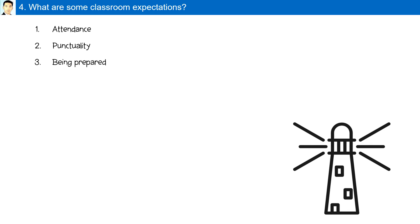Being prepared means coming to class with a chemistry reference table, all your materials, and ready to study. Regarding behavior, students are expected to treat the instructor and each other with respect. Students will be expected to raise their hands and, when acknowledged, ask or answer questions.